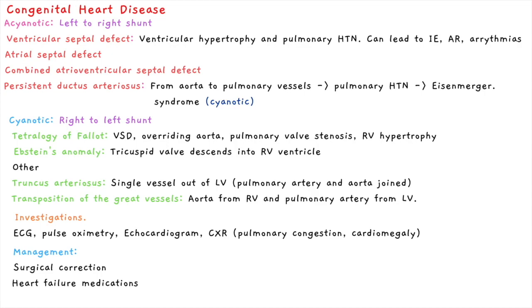This video is on pediatric cardiology. We will examine congenital heart disease in terms of acyanotic and cyanotic heart disease. In acyanotic heart disease the blood moves from the left to the right due to a shunt — from high pressure on the left to low pressure on the right — and this is usually due to a hole between the left and the right.